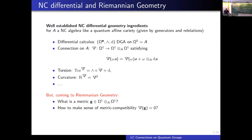There is a notion of curvature and torsion. When it comes to non-commutative Riemannian geometry, we have to introduce a metric. The first question is: what is a metric? Another point on which the community is still working is the metric compatibility condition.